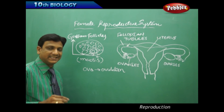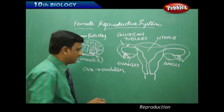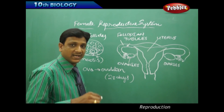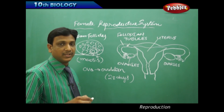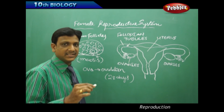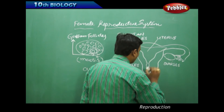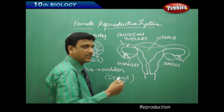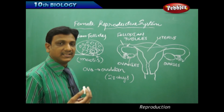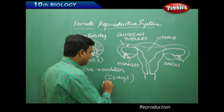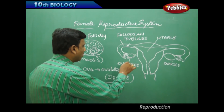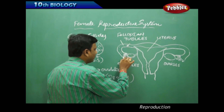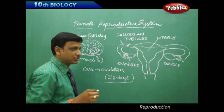Ovulation takes place in a cycle of 28 days, which we call the menstrual cycle. Only once in this 28-day period is one egg cell released, either by the left ovary or by the right ovary — alternately, one month the left and the next month the other. This egg cell is collected into the funnel-shaped fallopian tubule, where fertilization takes place.